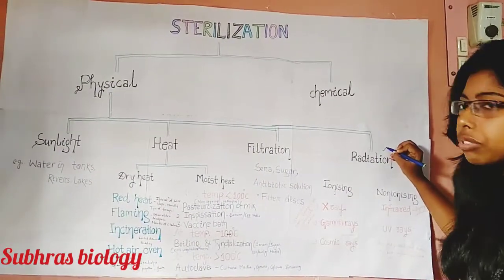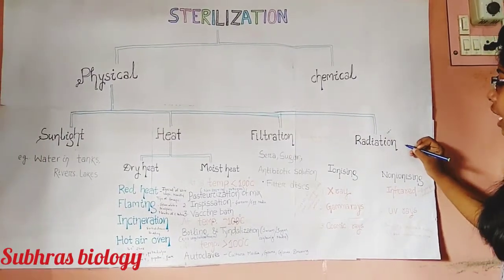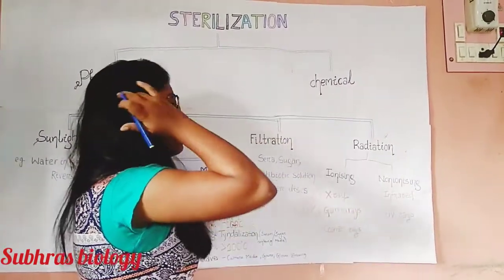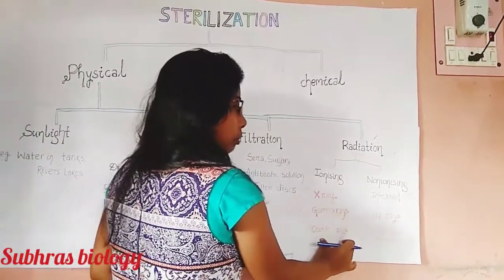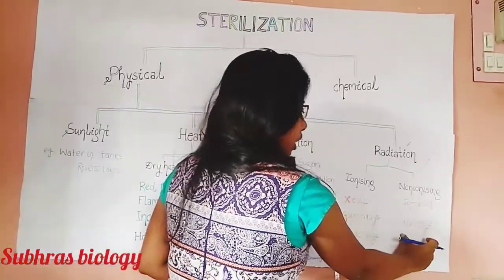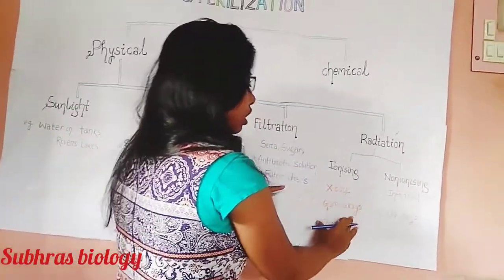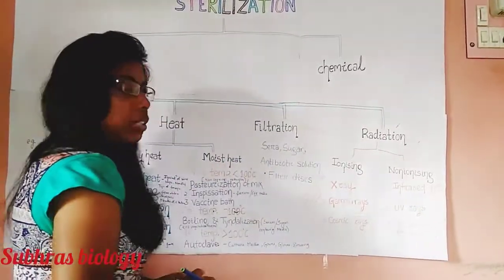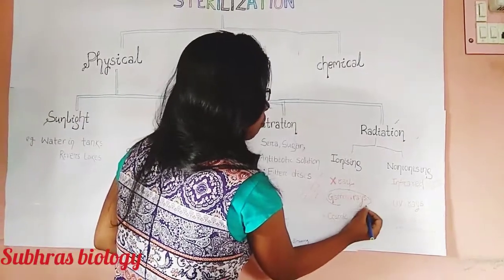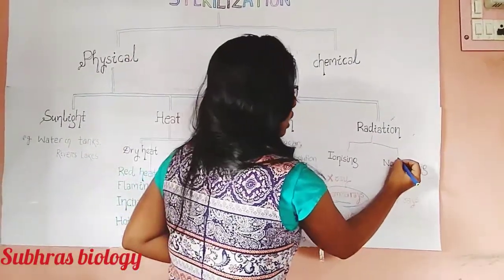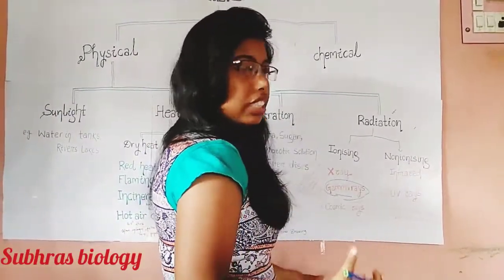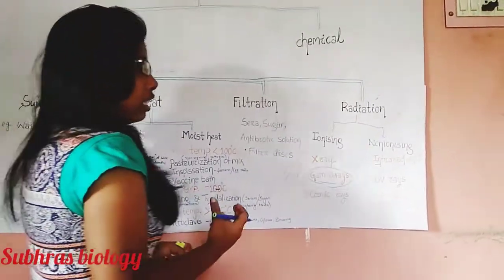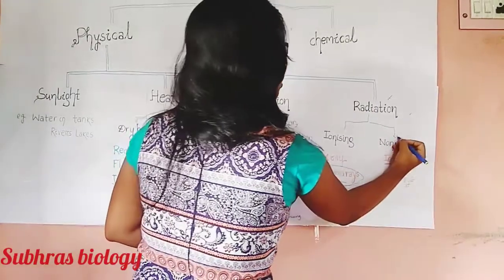The fourth and last type of physical sterilization is radiation, divided into ionizing radiation and non-ionizing radiation. Ionizing radiation includes X-rays, gamma rays, and cosmic rays. The best example is gamma rays from cobalt-60, used to sterilize plastic syringes, swabs, and culture plates. Non-ionizing radiation includes infrared rays, used for syringes and catheters, and UV rays, used for disinfecting enclosed areas such as bacteriological labs, laminar flow hoods, or operation theaters.